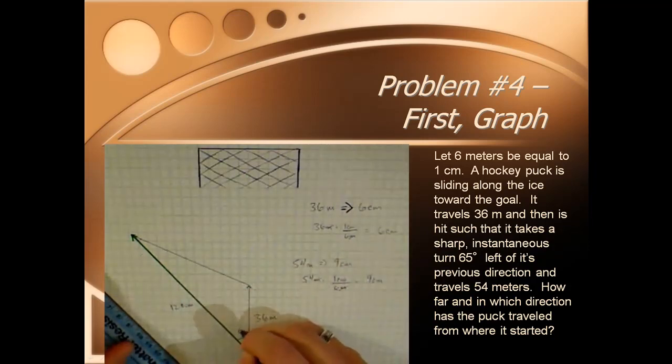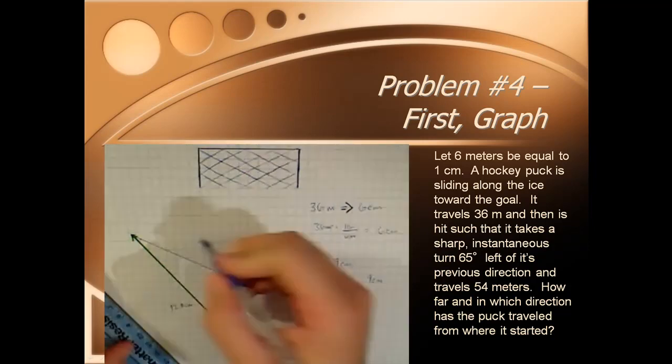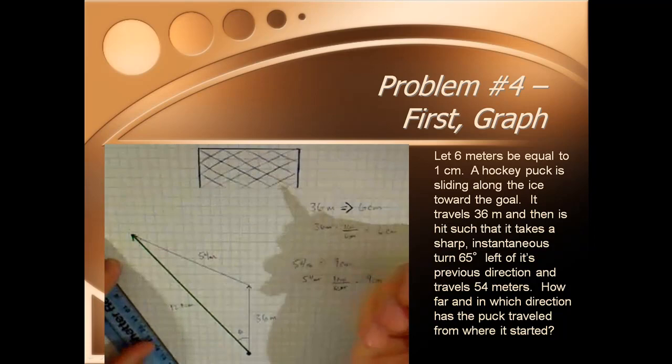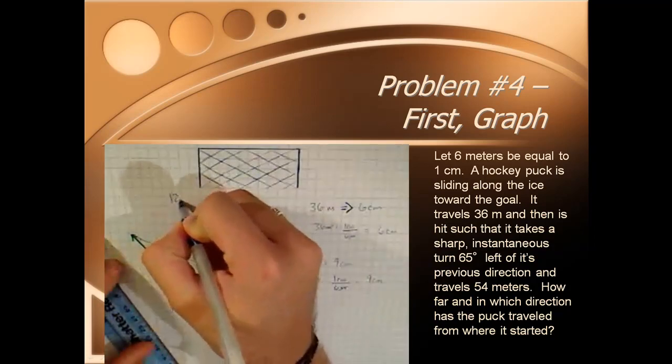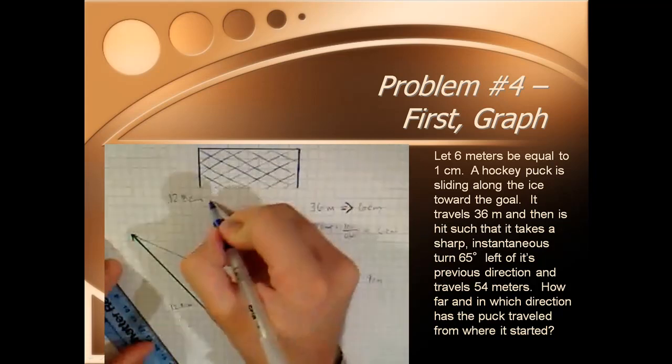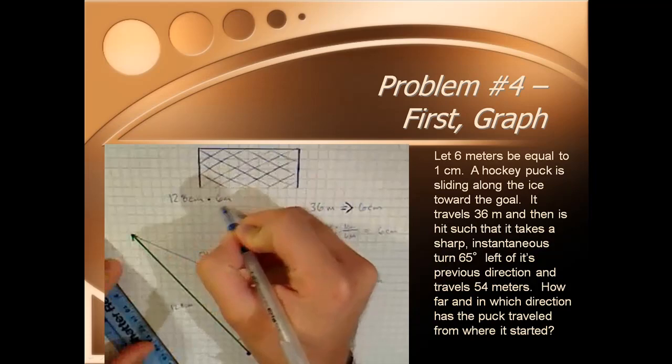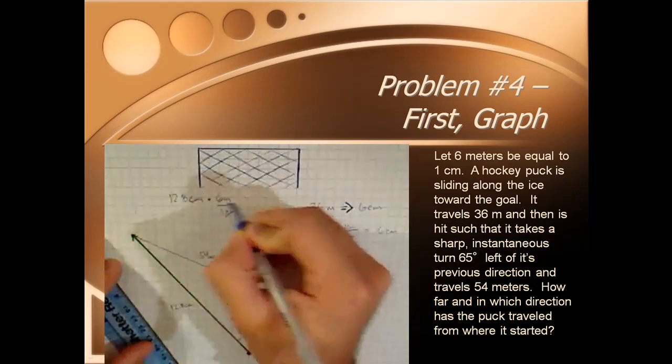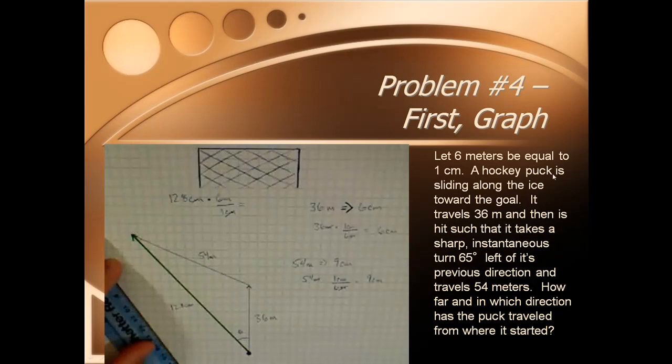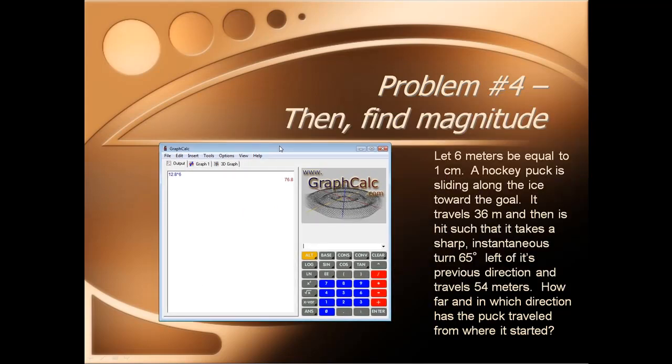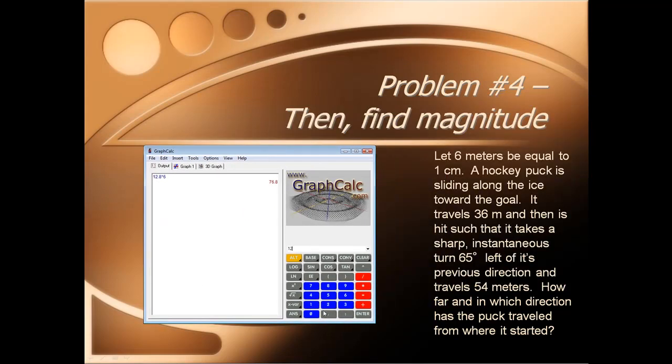The resultant is going to be 12.8 centimeters. Let's call this our angle theta. Oh, I forgot to label this. 54 meters. So, then we need to do this conversion here, 12.8 centimeters. 12.8 centimeters is going to multiply that by 6 meters per 1 centimeter. We're going to do this conversion, centimeters cancel, come over here, find our calculator, show that 12.8 times 6 is going to give us 76.8 meters.